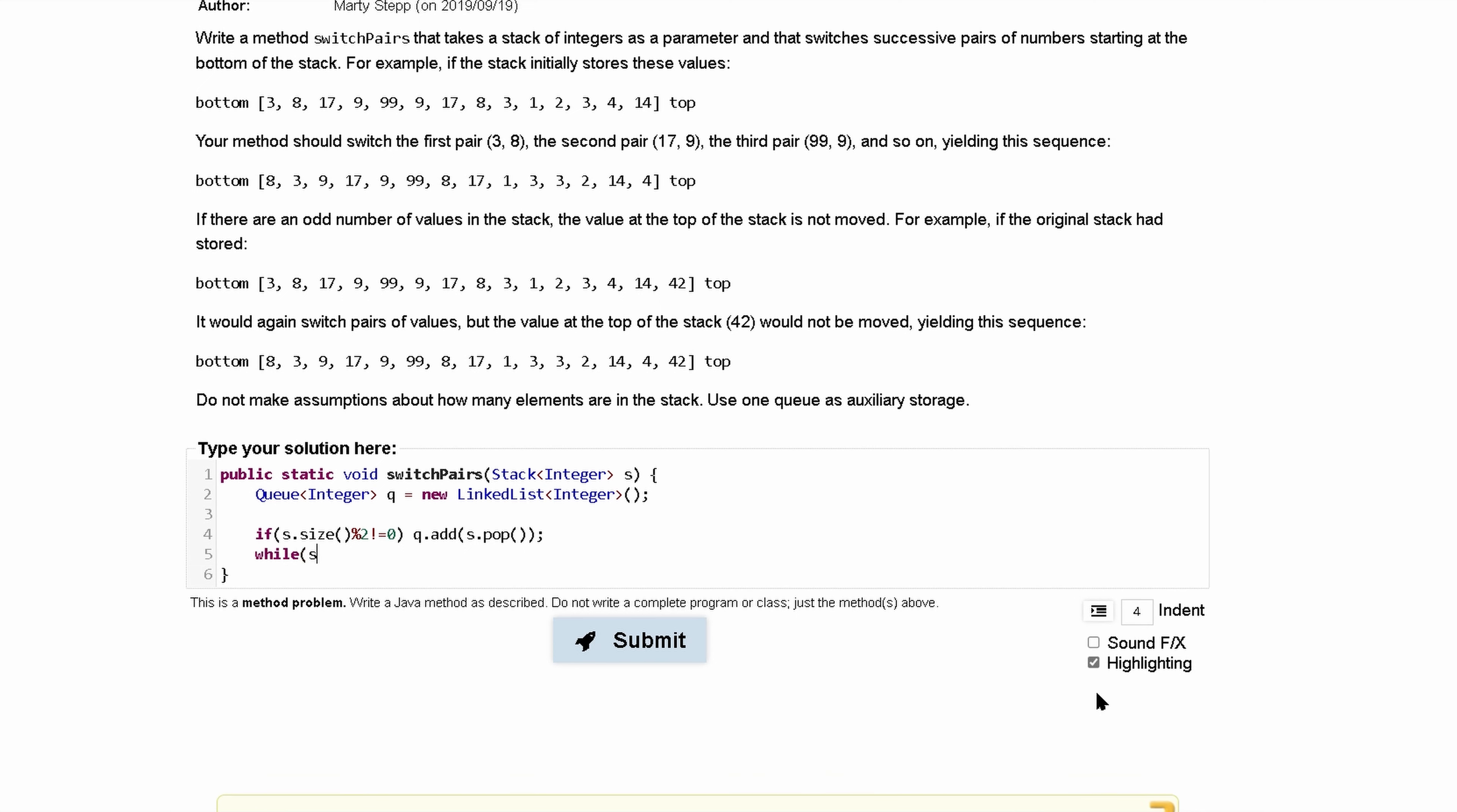Now, while our s, while our s is not empty, so that's why we have the not in front of here, we want to switch the two pairs. So let's make two temporary values. We'll do t1 is equal to s.pop. And then we'll do t2, if I can get this right.